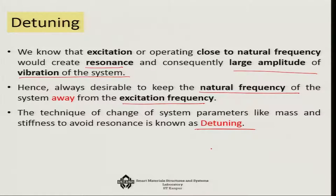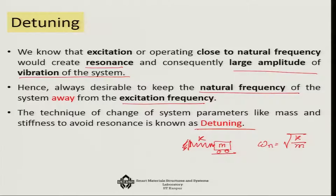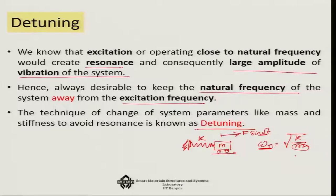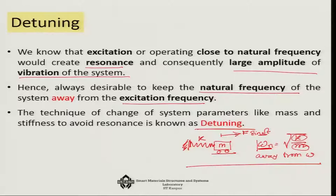For a single degree of freedom system — a mass m on a spring k with a frictionless wheel — the natural frequency is ωₙ = √(k/m). If it is excited at frequency f·sin(ωt), in order to keep ω separate from ωₙ so resonance does not occur, when ω is not in our control but ωₙ is, we either increase the stiffness or change the mass of the system. By changing stiffness or mass we keep ωₙ away from ω — that is the strategy of detuning.